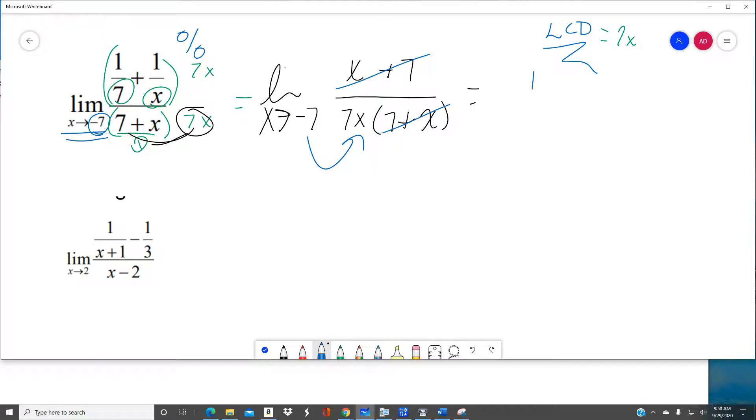The X plus 7s cancel. So now when I plug the negative 7 in, I'm going to get 1 over negative 49. And yes, that is going to be the limit. So this is a technique using the least common denominator to find a limit.